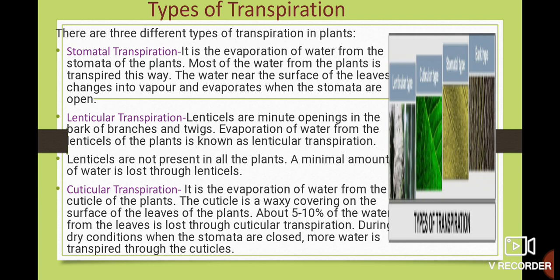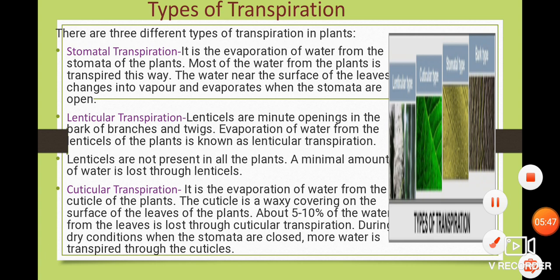Stomatal transpiration means the loss of water vapor through the stomata — the majority, about 80 to 90 percent, of water is lost through the stomata. Lenticular transpiration means the loss of water through the lenticels. Cuticular transpiration is the loss of water from the cuticle portion of the plant.